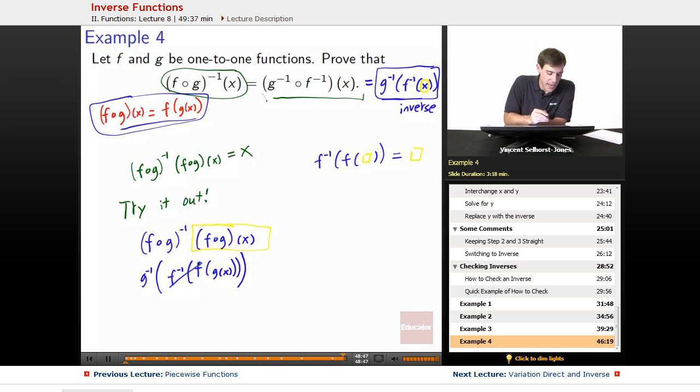So f inverse acting on f, that cancels out and we get g inverse acting on whatever was in there, which was g of x. So g inverse acting on g of x, exact same thing, we get down to x.